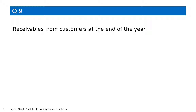Q9: receivables from customers at the end of the year. Receivables means we have supplied goods or services but have not yet collected money. Any such claim on the customer has value, and therefore it is an asset and would be in the balance sheet.